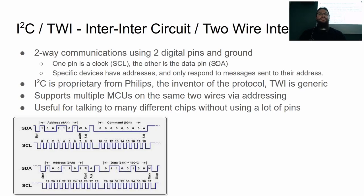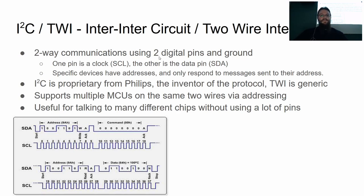The next communication protocol is I2C or TWI. It stands for Inter-Integrated Circuit or Two-Wire Interface. The reason there are two names is because Philips got litigious after they invented it, so others said they'd use a protocol that works exactly the same way with a different name. This allows two-way communications using two digital pins and ground, but between many separate devices — each device has an address, typically eight bits, so a specific device will receive a message even though they're all sharing the same bus. It's very useful for having lots of different chips talk to one microcontroller without using many pins.